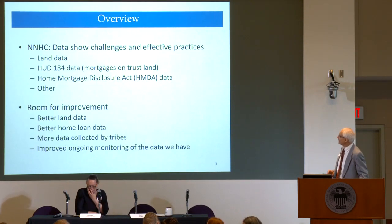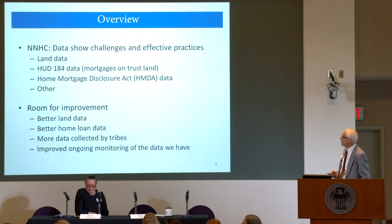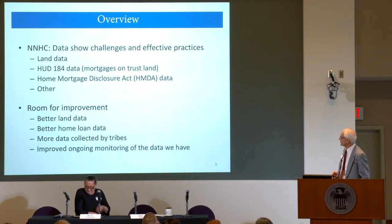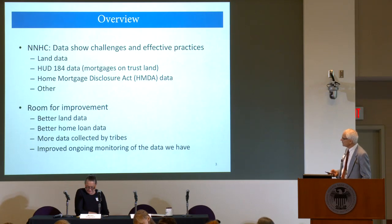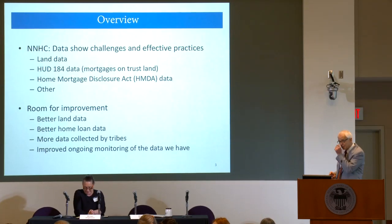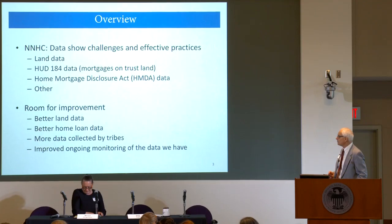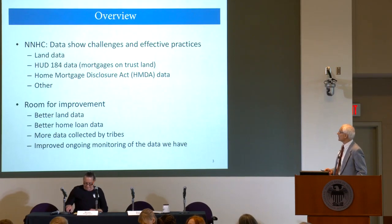We're going to talk about things that came out of the Native Homeownership Coalition — data that show both challenges and effective practices regarding land, the HUD-184 program, mortgages in general, and trust land. We'll use Home Mortgage Disclosure Act data and other sources. We're going to see room for improvement regarding all of these, and in particular room for tribes to be part of making things better.